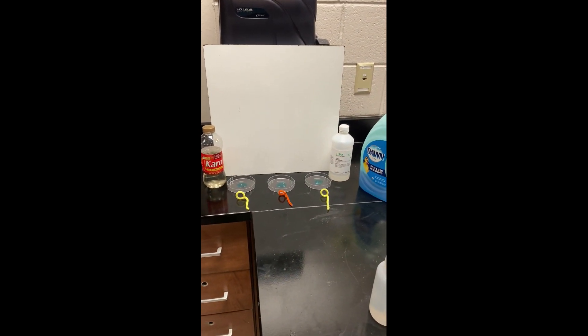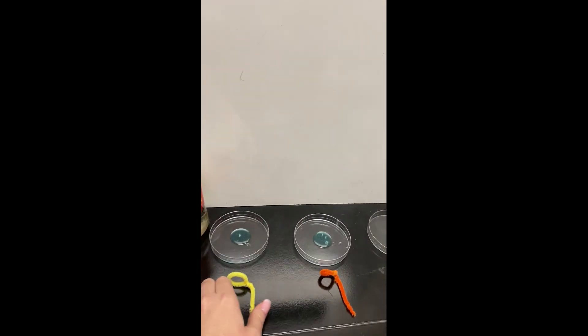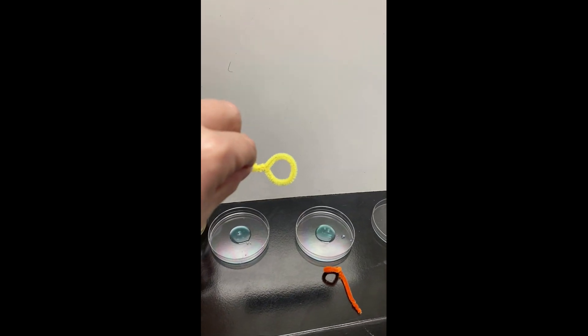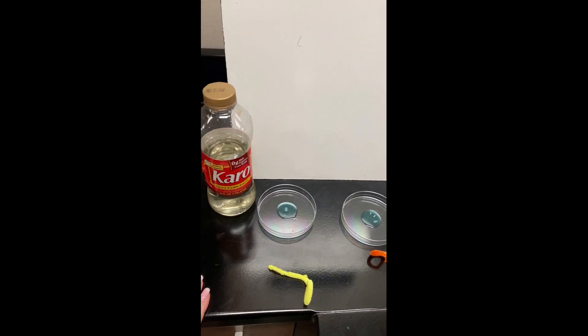I set up three pastry dishes and we put a little bit of Dawn Liquid Soap at the bottom of each one. I went ahead and made some bubble wands just using some pipe cleaners.